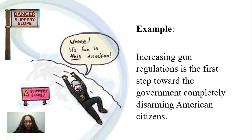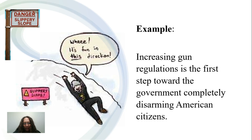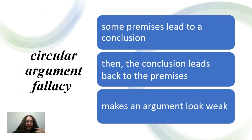So let's look at an example. Increasing gun regulations is the first step toward the government completely disarming American citizens. The fact that we are increasing gun regulations does not necessarily mean that we're taking away the guns from the citizens. Therefore, this is an exaggeration and this is called a slippery slope, because one action is not going to necessarily influence another action or result.